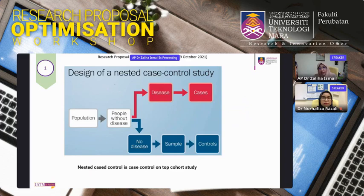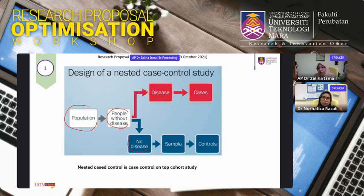A nested case-control study is actually a cohort study with a case-control conducted within it. We begin by choosing a population without the disease and follow them over time for an outcome. For example, if follow-up takes ten years but we want interim results at five years, we take those who developed the disease as cases and those without the disease as controls at that point — this is a nested case-control study.